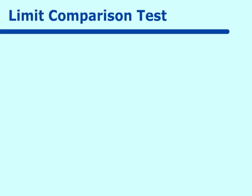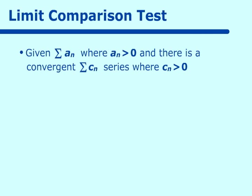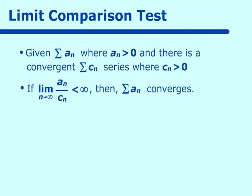The limit comparison test reads: given the series a sub n, where a sub n is greater than zero and you think it's convergent, then you pick a series called c sub n and compare the two. You take the limit as n approaches infinity of a sub n over c sub n, and if that limit is less than infinity — if it reaches a finite number — then your series converges.